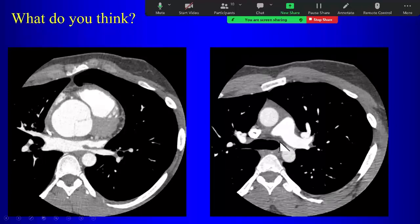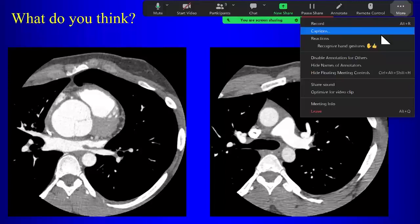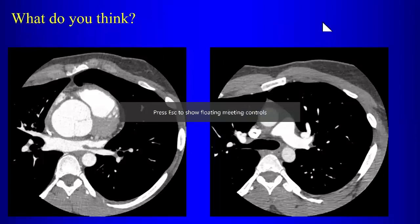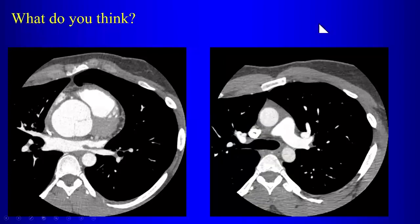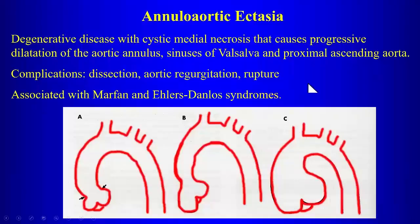When we see enlargement of the ascending aorta extending down to the aortic root — the tulip bulb sign — this is called annuloaortic ectasia, caused by cystic medial necrosis with progressive dilatation of the aorta down to the aortic annulus. This is associated with Marfan's syndrome. Complications include dissection, aortic regurgitation, and rupture. With annuloaortic ectasia, you get dilatation of all sinuses of Valsalva, as opposed to just one. It is associated with Marfan's and Ehlers-Danlos syndrome.